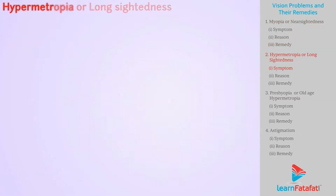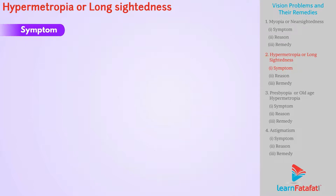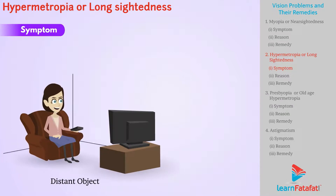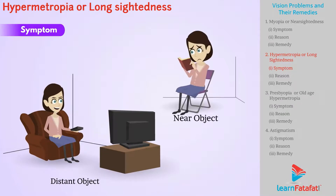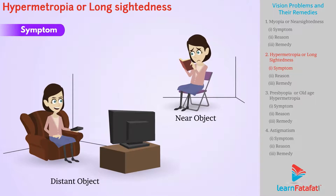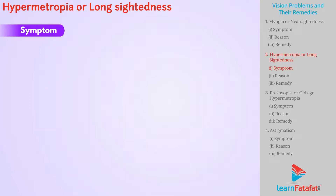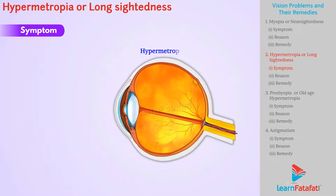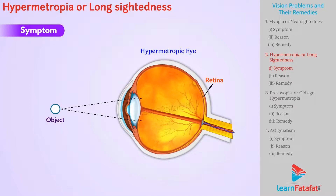Hypermetropia or long-sightedness: a person with this defect can see long distance objects clearly but can't see nearby objects clearly. A hypermetropic eye forms an image behind the retina.